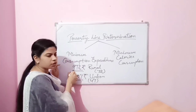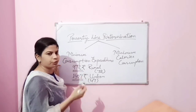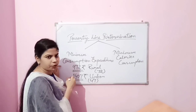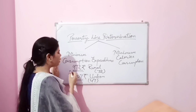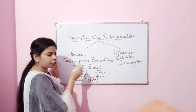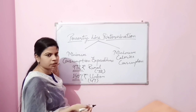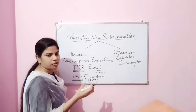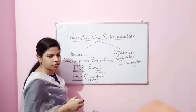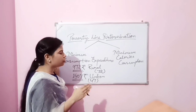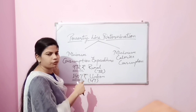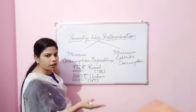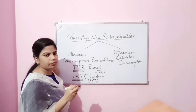Previously it was rupees 816 per person for rural areas and rupees 1000 per person for urban areas. Now it has been revised — rupees 972 per person for rural areas and rupees 1407 per person for urban areas as the monthly minimum consumption expenditure. On a per day basis, it is rupees 32 per person for rural areas and rupees 47 per person for urban areas.